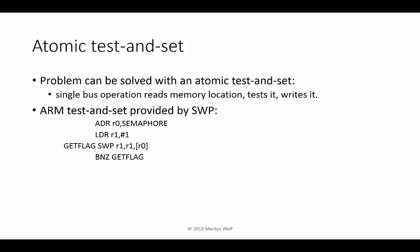The ARM architecture provides a test-and-set mechanism using the swap, or SWP, instruction. In this code, we load the location of the semaphore, then read it in a loop. The get-flag loop uses swap to exchange the current value of R1 with the contents of the semaphore location. If that value is not zero, it goes back and re-executes the loop. The loop waits until the semaphore is zero, then exchanges that value for a one so the next process won't think the semaphore is available.